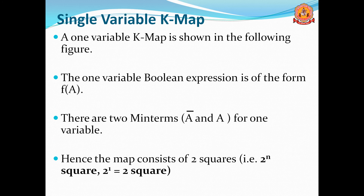Now we move to the single variable K-map. For a one variable Boolean expression F(A), there are two min terms: A' and A. Since 2^1 = 2, the map consists of two squares. The first square represents A' (value 0) and the second represents A (value 1), designated M0 and M1.